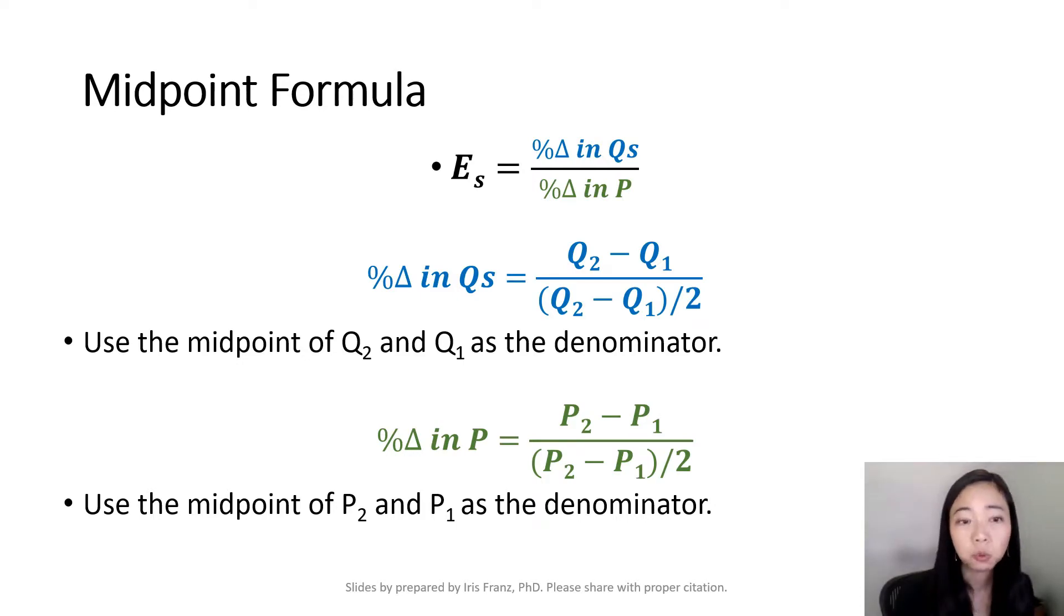As before, we are going to use a midpoint formula to calculate percentage change. So percentage change in quantity supplied will be Q2 minus Q1 divided by the midpoint of Q2 and Q1. And the percentage change in price is the same: P2 minus P1 divided by the midpoint of P2 and P1.